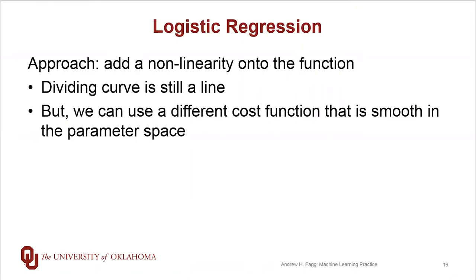So what we're going to do is add an extra level of non-linearity into this process. Our dividing curve is still going to be a line, but we're going to set up our cost function so that it's smooth in the parameter space, and it captures these distances really near the dividing line, but it doesn't really care about points that are far away from the dividing line.